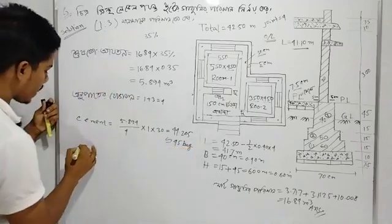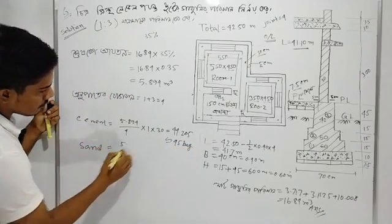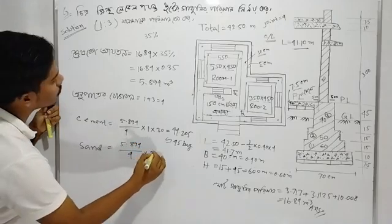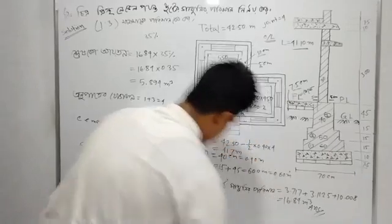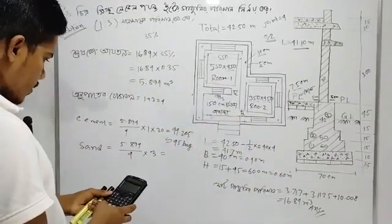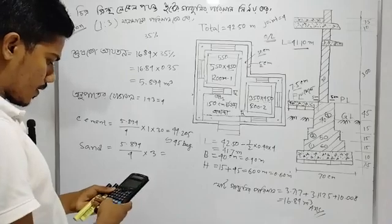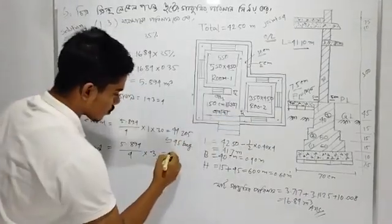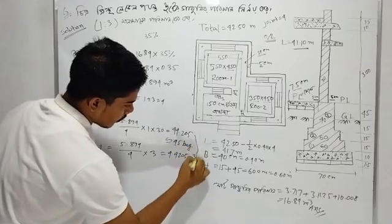5589.4 divided by 4 — into three. Valley like this: 4542.05 meter cube. Five five eight nine four — five five, four four two zero, five meter cube.